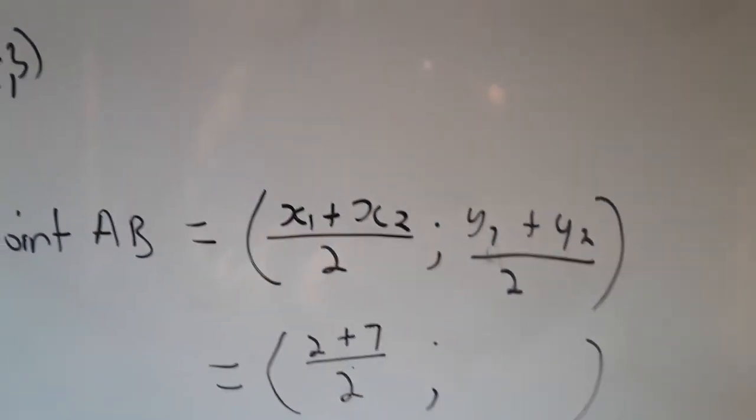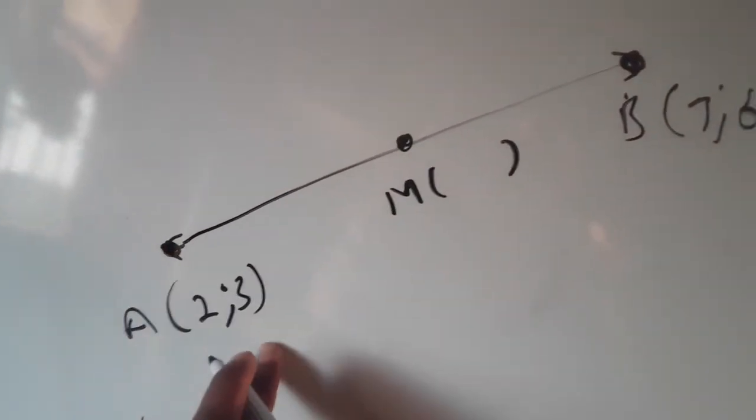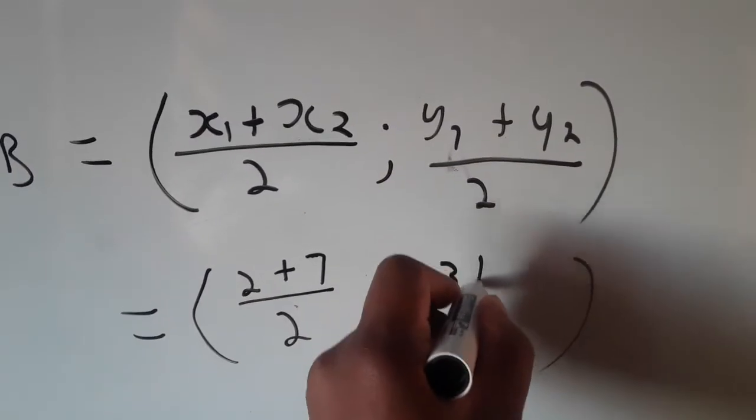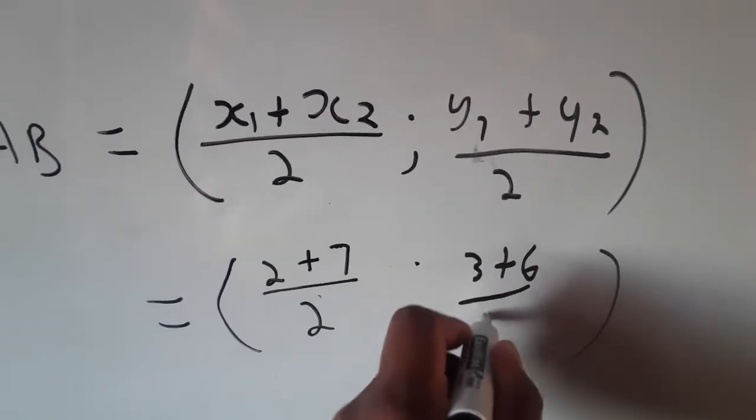Then the first value of y is 3, and the second is 6, so you're going to have 3 plus 6 all over 2.